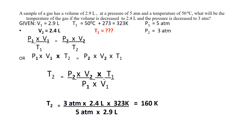Problem 2: A sample of gas has a volume of 2.9 liters — this is the initial volume V1 — at a pressure of 5 atmospheres, which is the initial pressure P1, and a temperature of 50 degrees Celsius, which is the initial temperature T1. What will be the final temperature T2 if the volume is decreased to 2.4 liters (V2) and the pressure is decreased to 3 atmospheres (P2)?